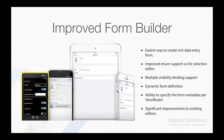Crosslight Form Builder provides the easiest way to create rich data entry forms for your business apps. In this release, the Form Builder has been significantly enhanced with many new features such as enum support, which will be automatically rendered as a list selection editor, and multiple visibility binding support. Even better, you can now create forms dynamically through APIs with the ability to specify form metadata per view model. The existing editors also received significant enhancements. We will see the improved Form Builder in just a moment.